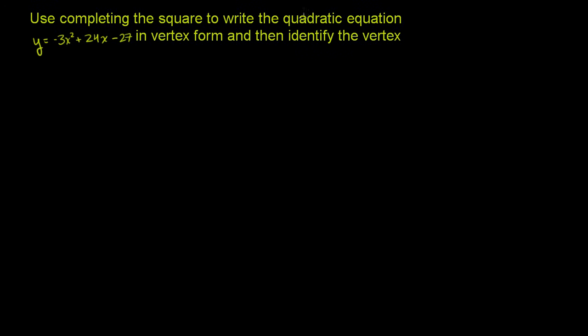Use completing the square to write the quadratic equation y equals negative 3x squared plus 24x minus 27 in vertex form, and then identify the vertex.